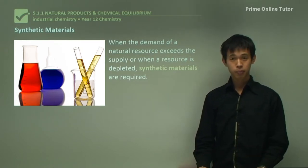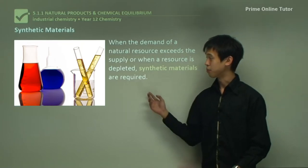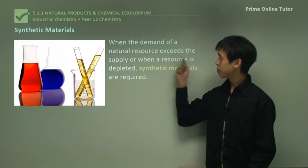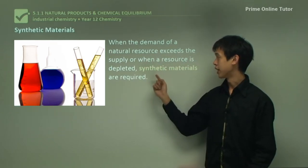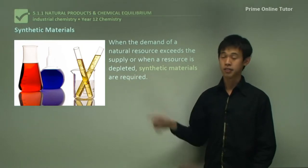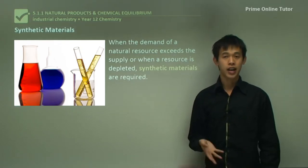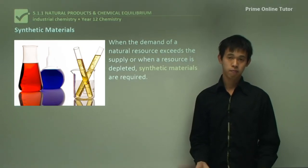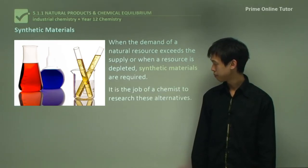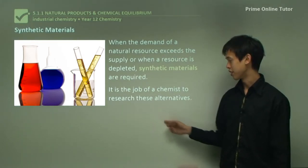One of the main roles of a chemist is to produce synthetic materials when needed. When the demand for a natural resource exceeds the supply, a resource can be depleted, and we resort to synthetic materials instead. When there's too much demand for something and the natural way of making it can't keep up, we generally resort to synthetic materials - and it's the job of a chemist to research these alternatives.